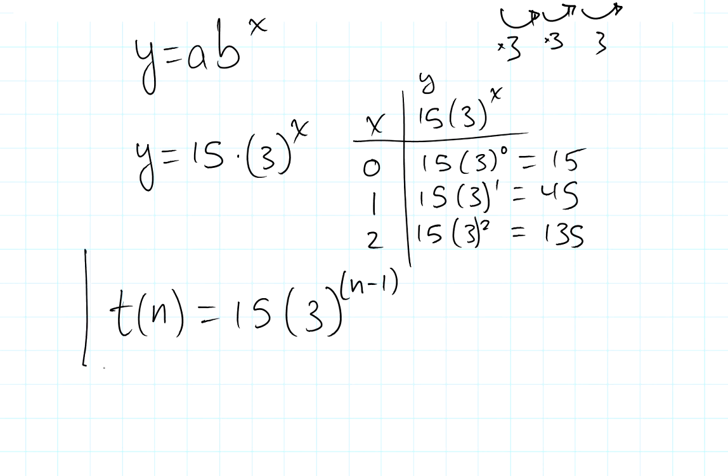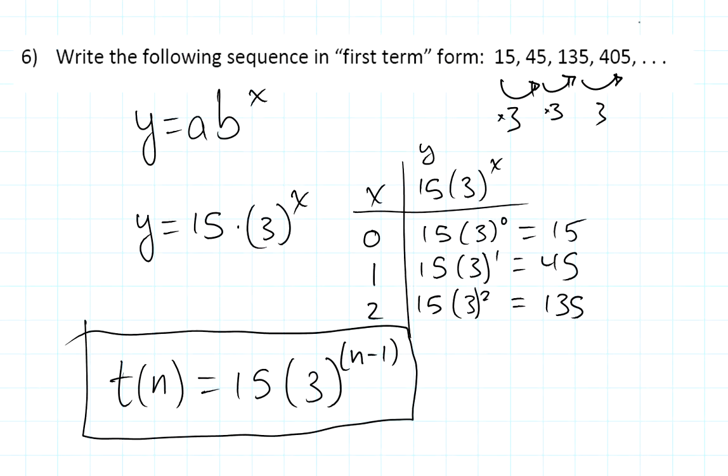So this is this geometric sequence in first term form. If I want to know the first term I plug one in for n and it gives me 15. If I plug in two it will give me—two minus one—it'll give me 45. When I plug in three, the third term, it's going to give me the number 135. And if I plug in four I get that first number right up there, 405. That's it for question six.